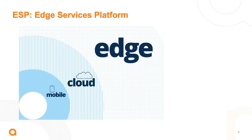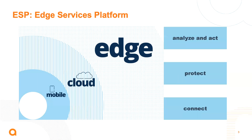An edge network must provide connection, protection, and intelligence to analyze and act. So Aruba addresses these three needs under a single architecture called ESP, or Edge Services Platform. The architecture is based on three technology levels: connectivity, policy — where we define how we protect the network — and services, where we manage everything, analyze, and take action.